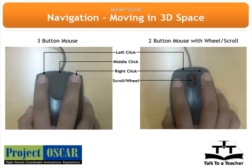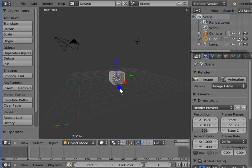Navigation in Blender depends a lot on the type of mouse you have — a 3-button mouse or a 2-button mouse with a wheel. I am using a 2-button mouse with a wheel for this series of Blender tutorials. The first action we shall see is panning a view. There are 3 ways of doing this using the mouse and the keyboard.